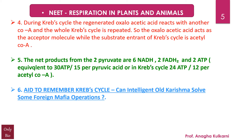An easy way to remember the Krebs cycle intermediates is by remembering the line: 'Can Intelligent Old Charisma Solve Some Foreign Mafia Operations,' where C stands for citric acid, I for isocitric acid, O for oxaloacetic acid, K for alpha-ketoglutaric acid, S for succinyl coenzyme A, S for succinic acid, F for fumaric acid, M for malic acid, and O once again for oxaloacetic acid.